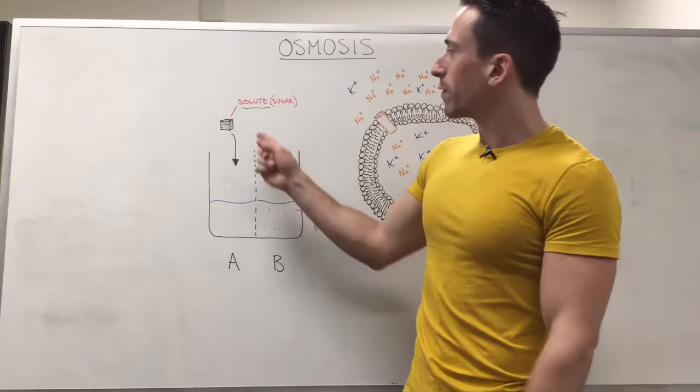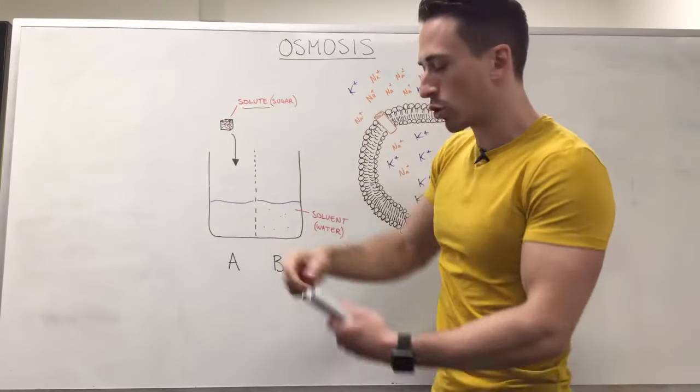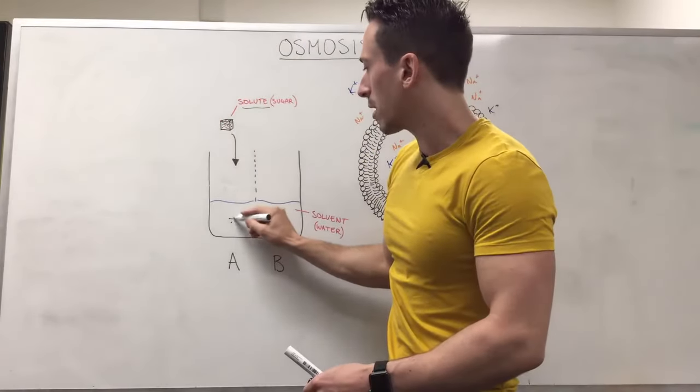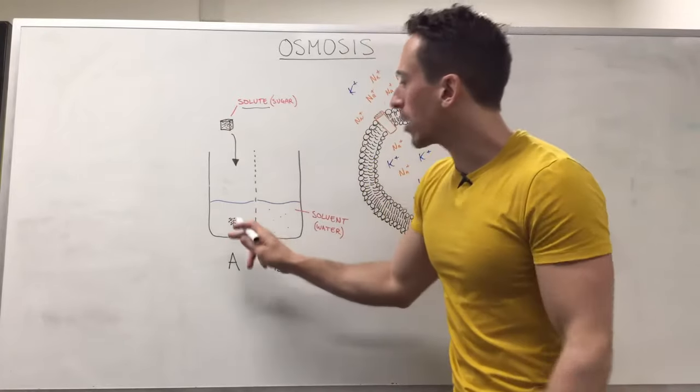So what we've got is a sugar cube. We drop the sugar cube in on this side of the membrane and because we know diffusion, the high concentration of solutes of the sugar cube will diffuse throughout the solution until it is evenly distributed.